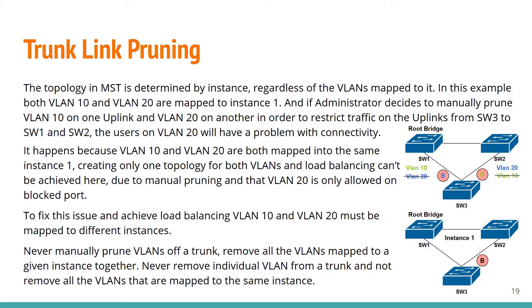It happens because VLAN 10 and VLAN 20 are both mapped into the same instance 1, creating only one topology for both VLANs. Load balancing cannot be achieved here due to manual pruning, and VLAN 20 is only allowed on the blocked port. So here, the administrator wants to achieve a topology where VLAN 20 is pruned from the uplink from SW3 to SW1, and VLAN 10 is pruned from the uplink from SW3 to SW2.